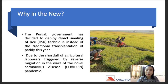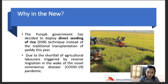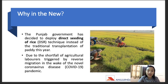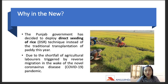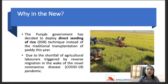We also have another traditional method which is the transplantation method, where we transplant the rice. Instead of that, the Punjab government has deployed the DSR method in place of the traditional method. This was actually due to the shortage of agricultural laborers, which was triggered by the coronavirus pandemic, and because of that there was a lot of shortage of labor.